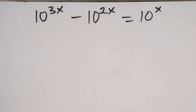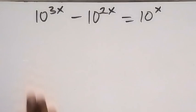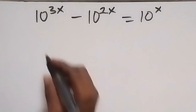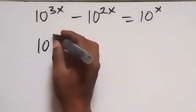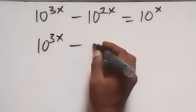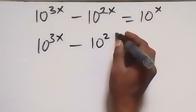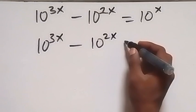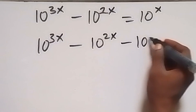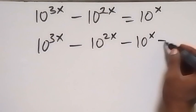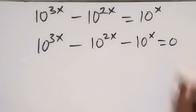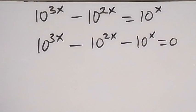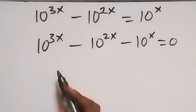Hello, you are welcome. How to solve this nice olympiad problem. From here we can rewrite this as 10 raised to power 3x minus 10 raised to power 2x, then we take 10 raised to power x, and here also becomes minus 10 raised to power x, then equals to zero. In the next step we can separate this.